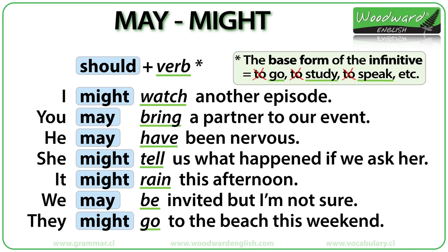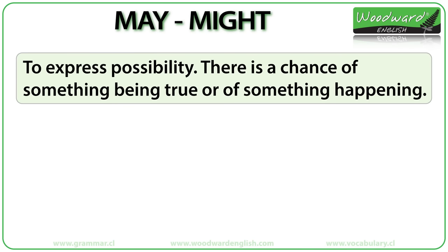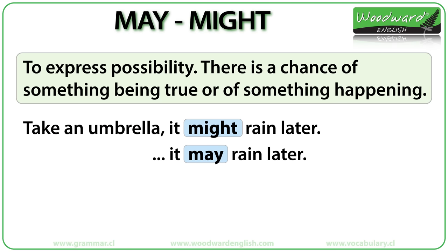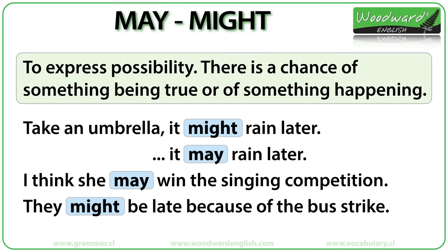When do we use may and might in English? We can use may and might to express possibility — there is a chance of something being true or a possibility of something happening. Note that might is used more frequently than may in spoken English in this case. For example: 'Take an umbrella — it might rain later,' meaning there is a possibility that it will rain. You can also say 'it may rain later.' Other examples: 'I think she may win the singing competition because her voice is amazing.' 'They might be late because of the bus strike.'